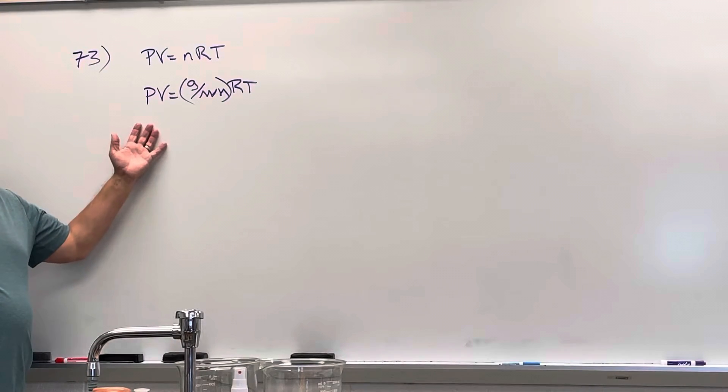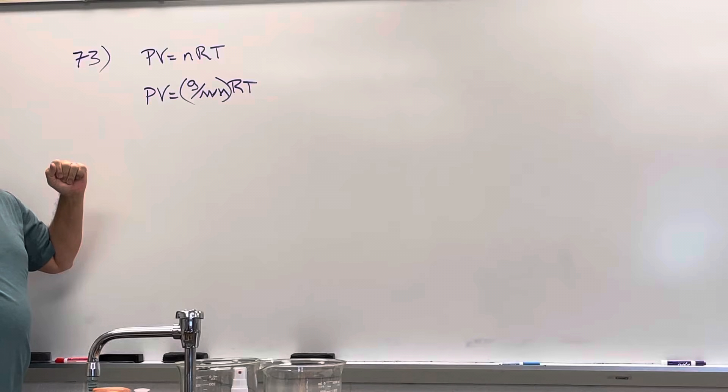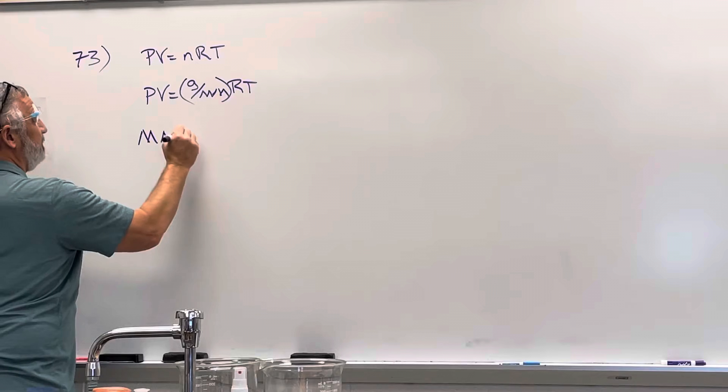I have two different things, right? So the first thing I want to do, I think the easiest thing to do is just calculate the molar mass. What does molar mass equal? gRT over PV. Molar mass is gRT over PV.